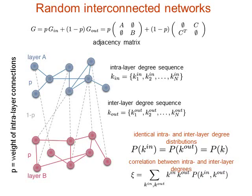Another varying parameter is P: the relative weight of intra-layer versus inter-layer connections. When P equals 1, inter-layer connections essentially don't exist. When P equals 0, you have only inter-layer connections. P can range between 0 and 1.